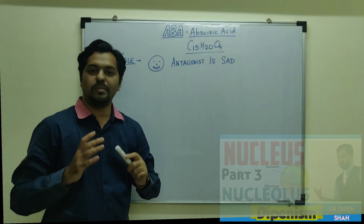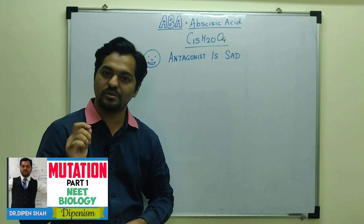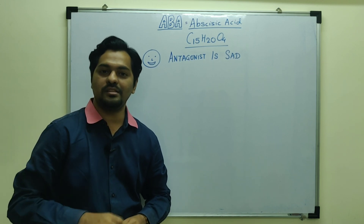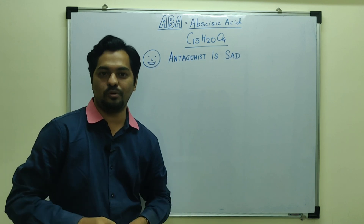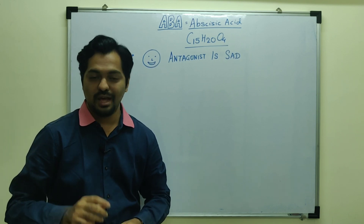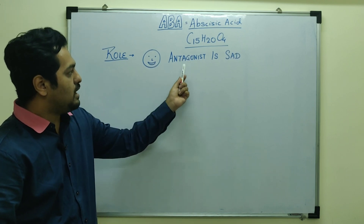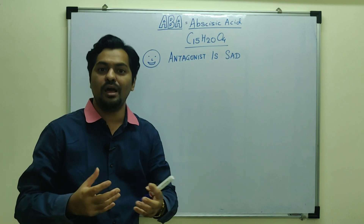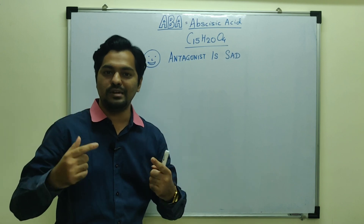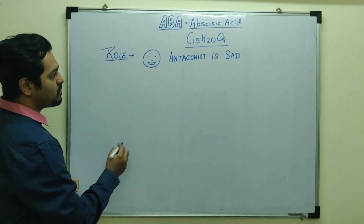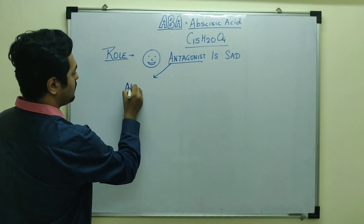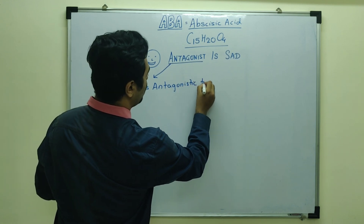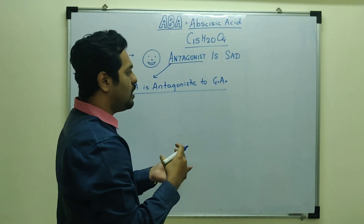Coming to the role of abscisic acid — just as I gave tricks for other hormones, here the trick is: happiness ka antagonist is sadness. Antagonist means opposite. So abscisic acid's role is completely opposite to gibberellic acids. Gibberellins are plant growth promoters, whereas abscisic acid has growth inhibitory activity.